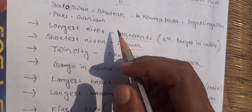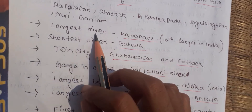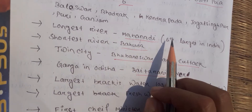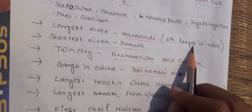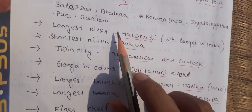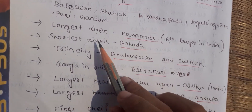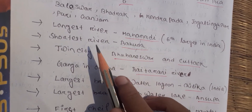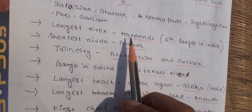The longest river of Odisha is the Mahanadi, which is also the sixth largest river in India. The shortest river of Odisha is the Bahuda.